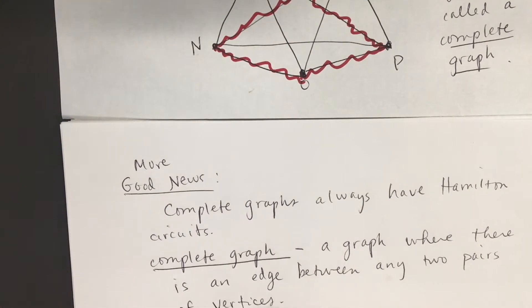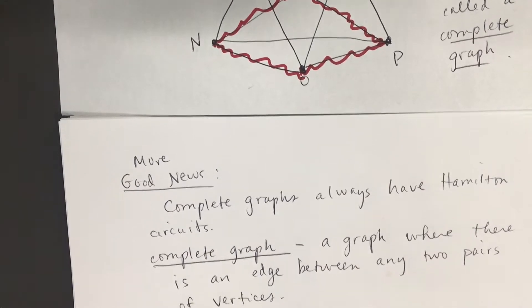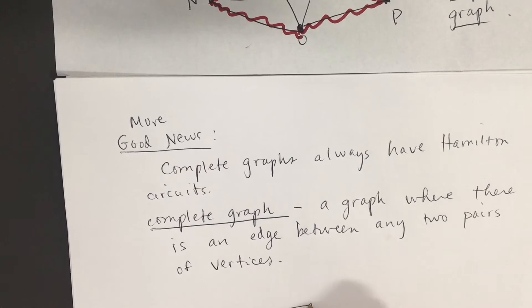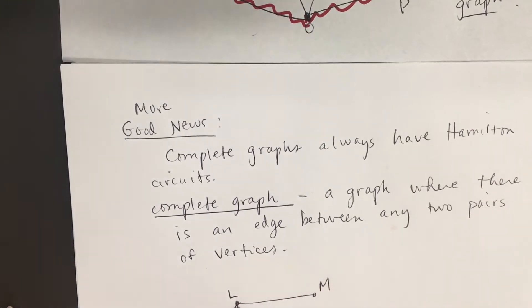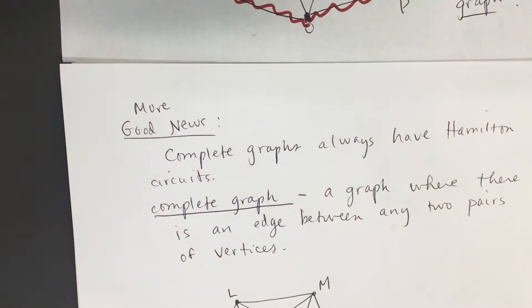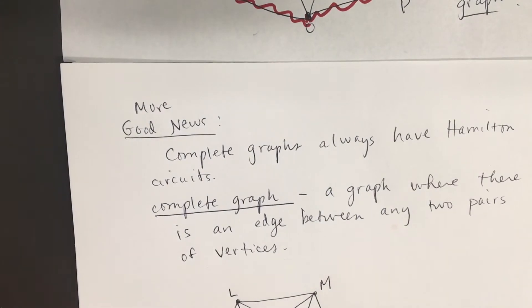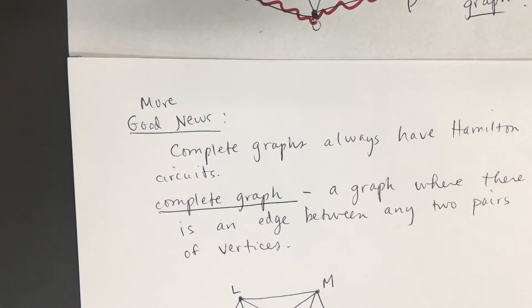I'm going to draw the example I had previously again because I want to talk about how many Hamilton circuits a graph like that would have. I'll use the same labeling I used previously. Five vertices. The degree of each vertex is going to be four because there's a connection to all the other four vertices. But Hamilton circuits have nothing to do with the degree of the vertex.